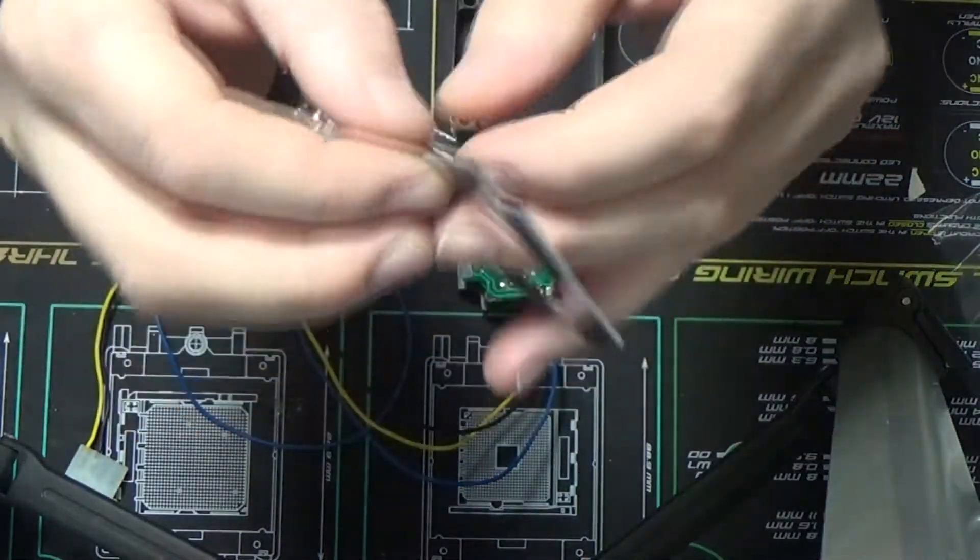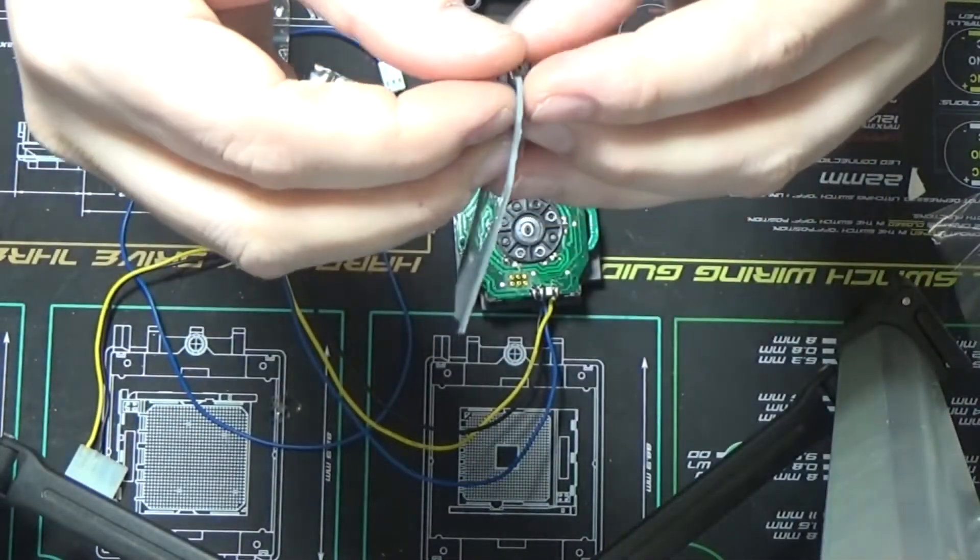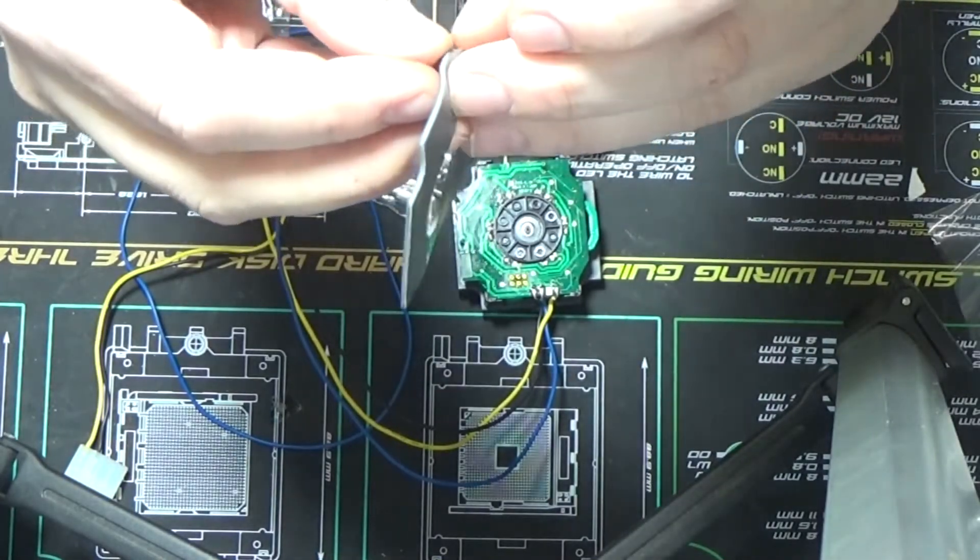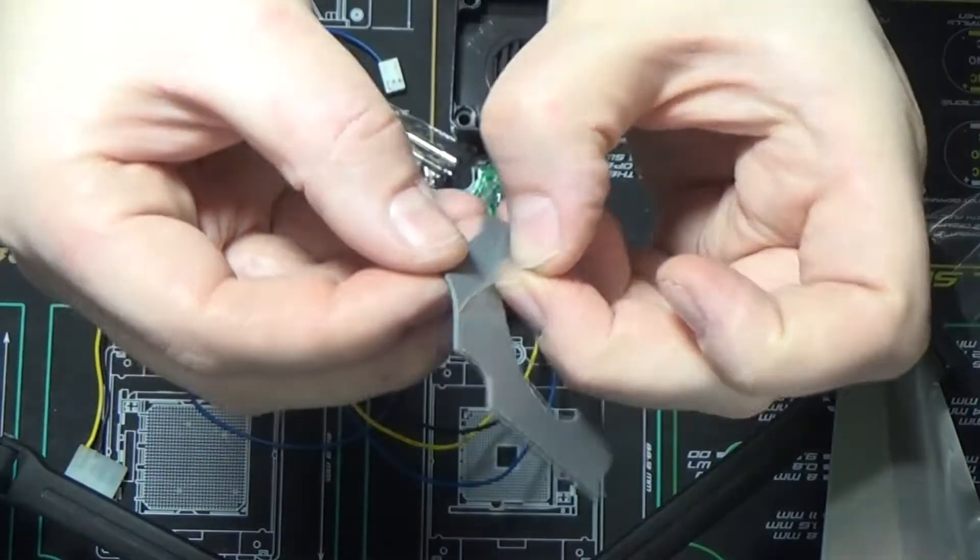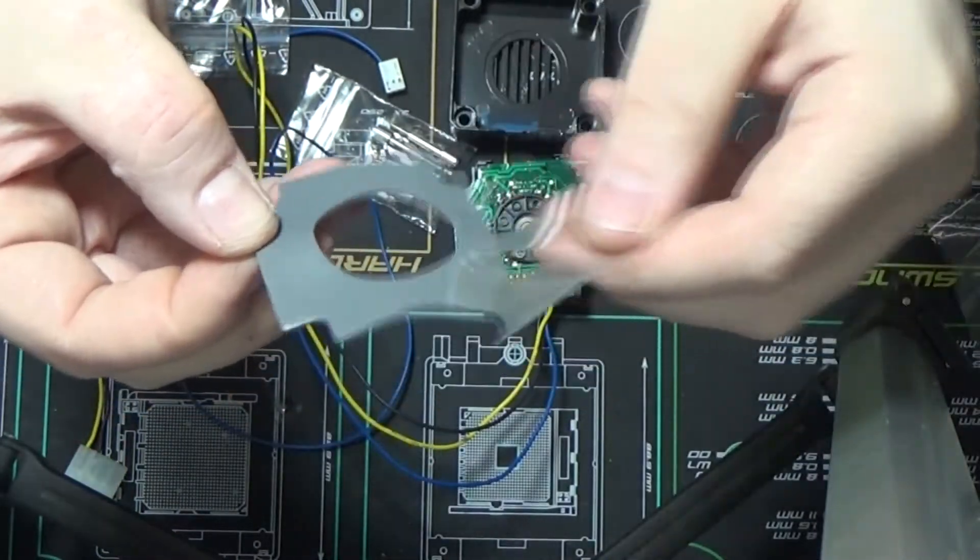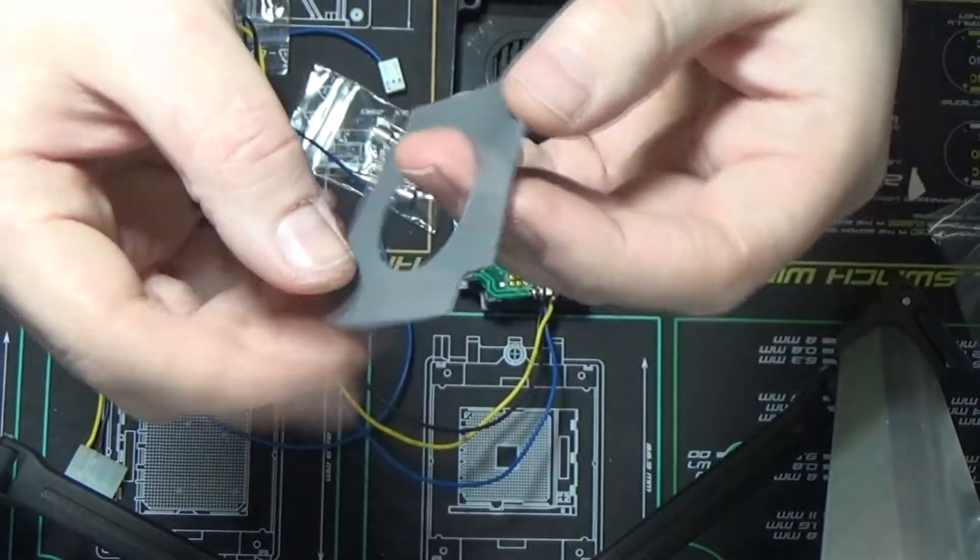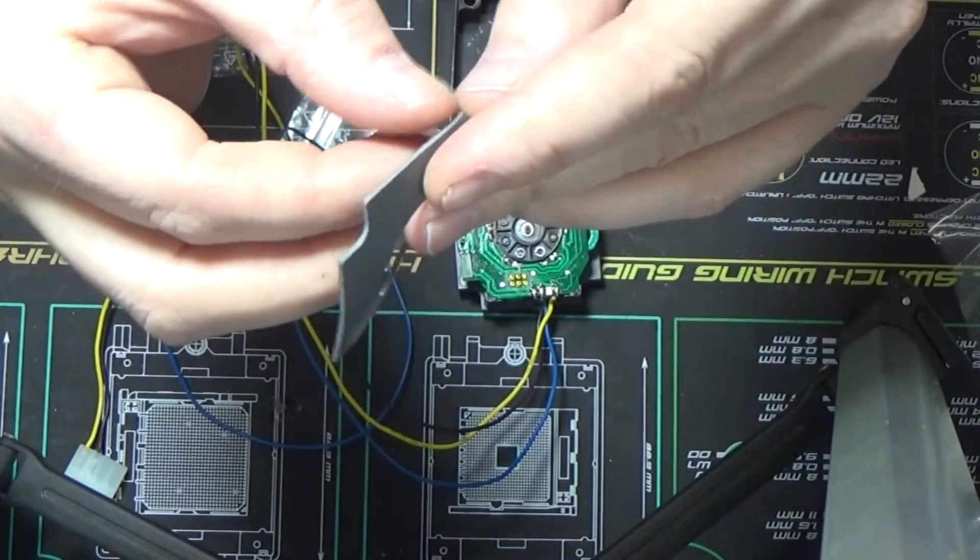First thing to do, always, always, always, because then you're just going to circumvent the whole heat sink, is you need to peel this plastic off. If you don't peel this plastic off, you are essentially making this a thermal insulator rather than a thermal conductor.